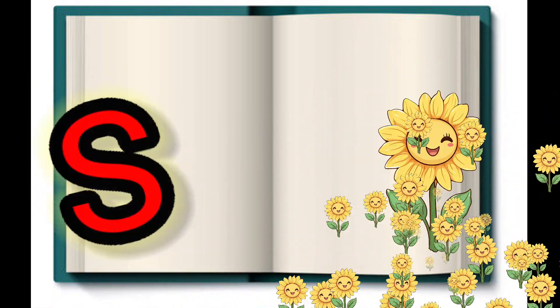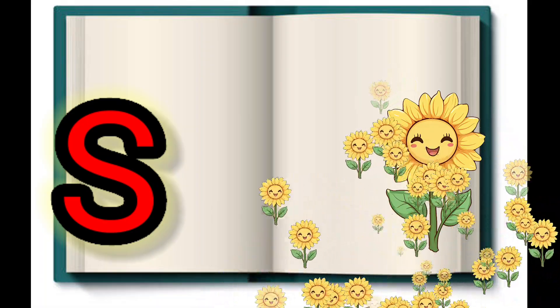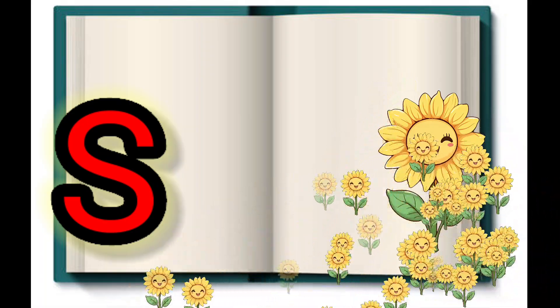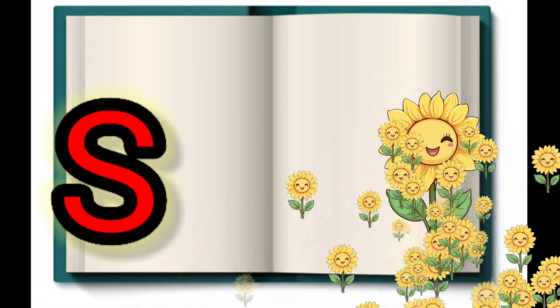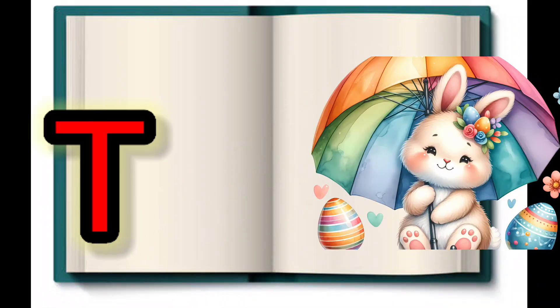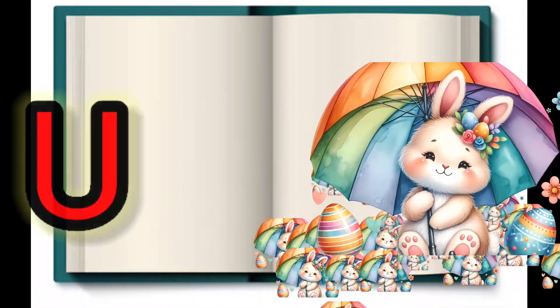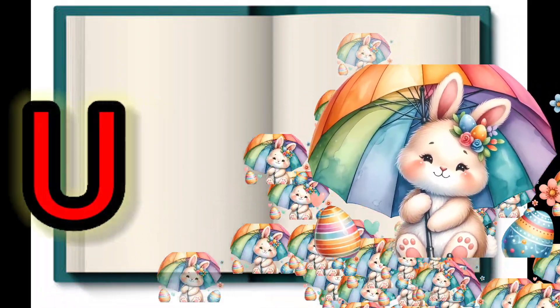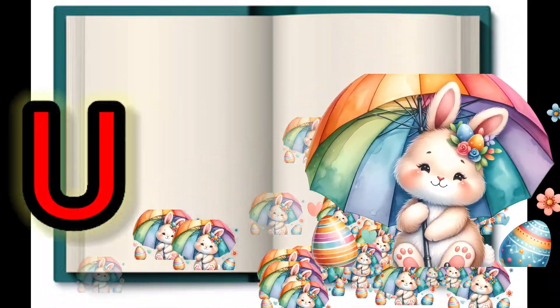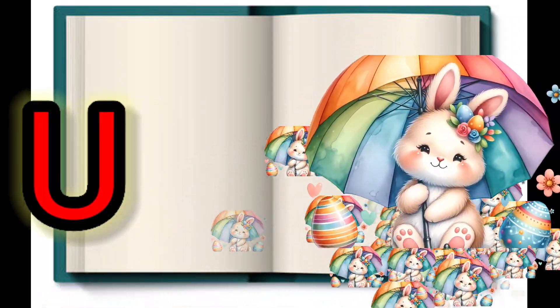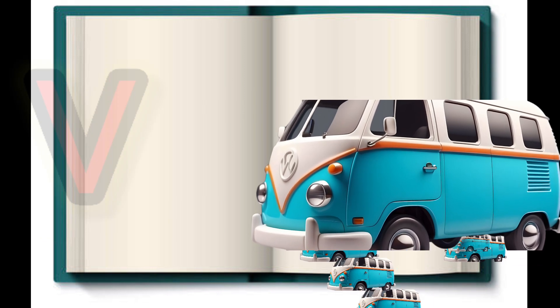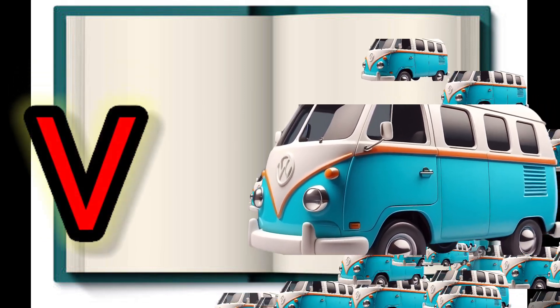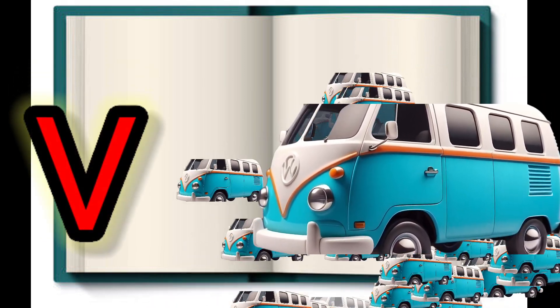S, S for Sunflower. T, T for Trumpet. U, U for Umbrella. V for Van.